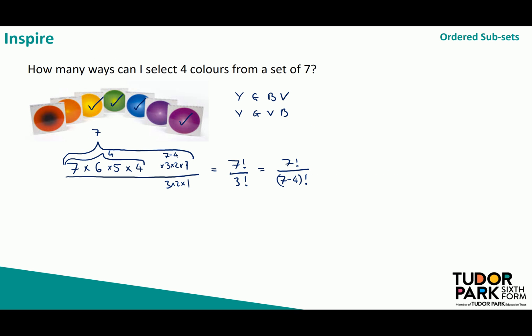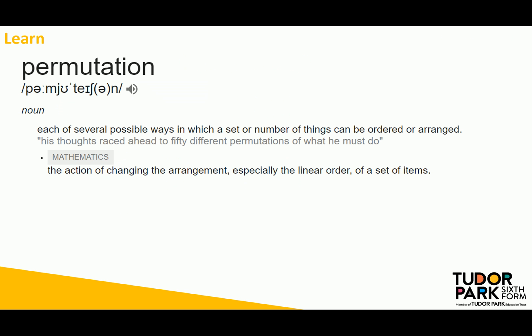So another way of writing this would be to say that this is seven factorial over seven minus four factorial. Or if I wanted a more general version instead of saying four colours I would say r instead of saying seven I would say n and my general formula becomes n factorial over n minus r factorial. And this tells me the different orders I can pick r objects from a collection of n. And that's exactly what a permutation is. It's the action of changing the arrangement especially the linear order of a set of items.